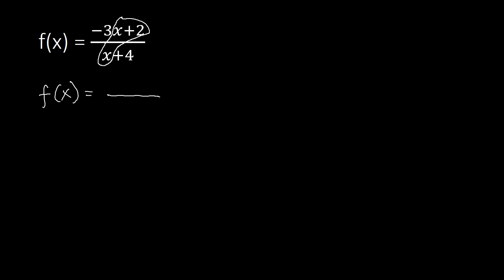Keeping that in mind, we retain the encircled parts — so we still have a fraction for the inverse of the function. We retain x plus 2 on the numerator and the x on the denominator. Now we swap the numbers: instead of negative 3 at the top, that becomes negative 4 attached to x; and your negative 3 goes down but becomes positive 3.